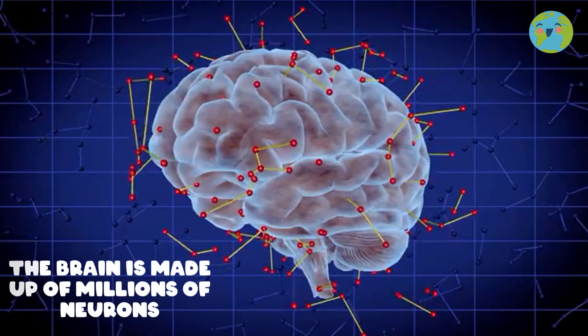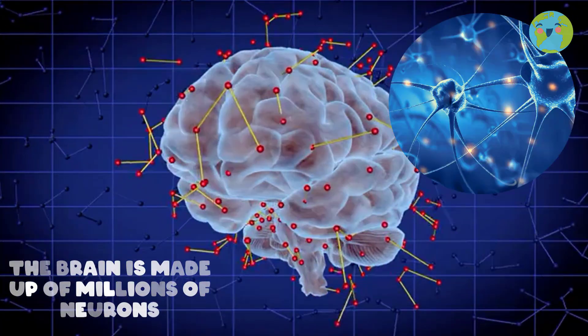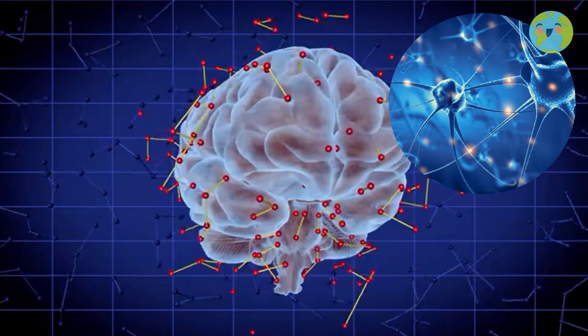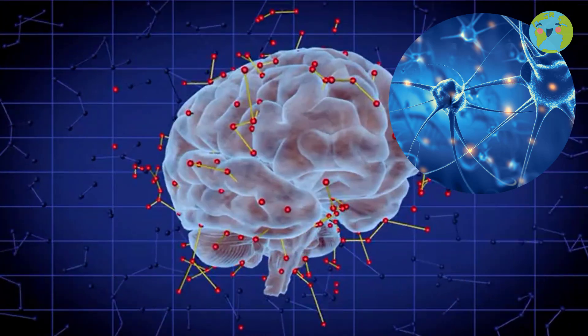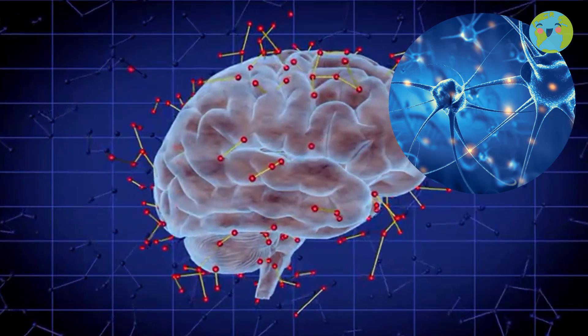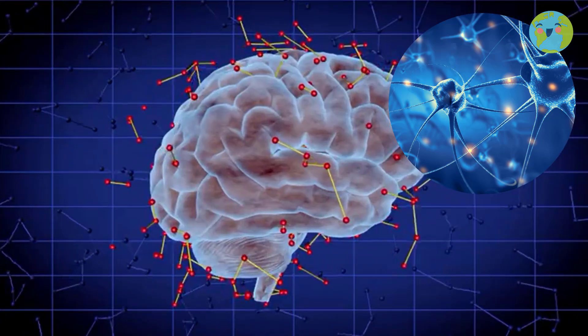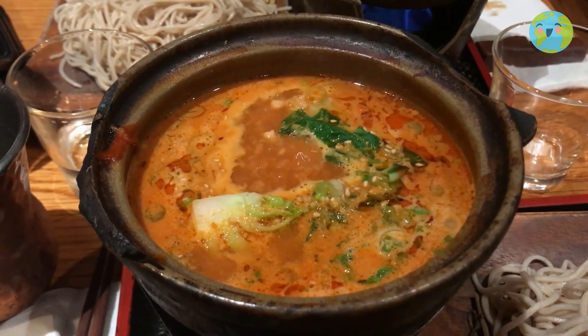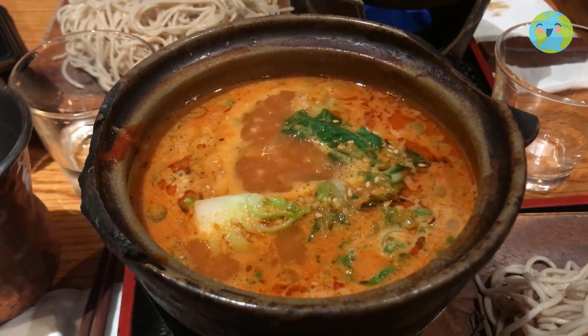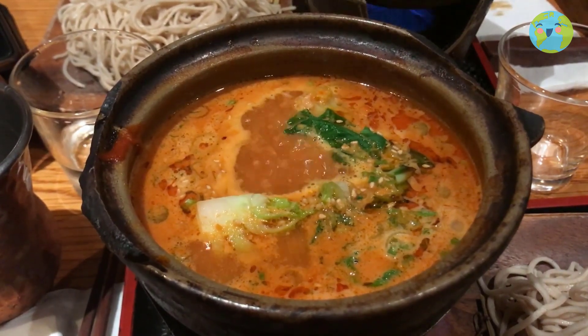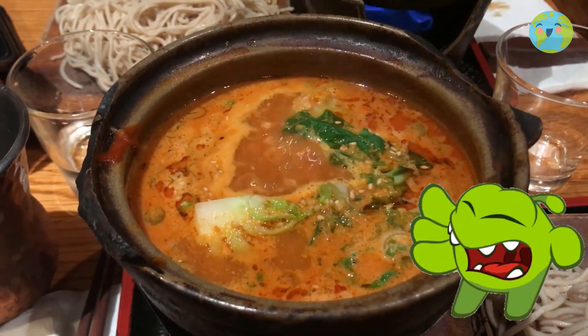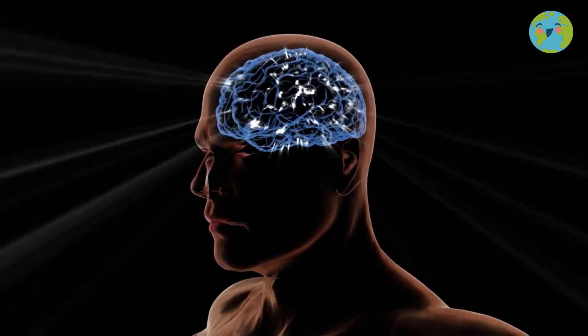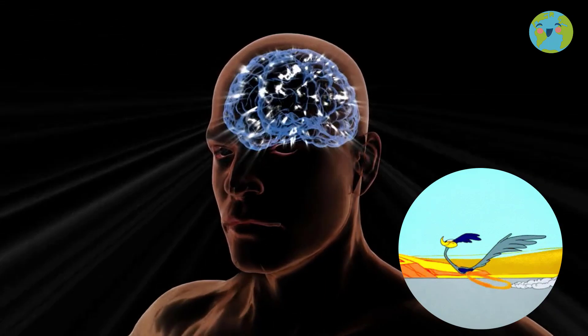The brain is made up of millions of neurons and it is thanks to these microscopic cells that our brain is always sending impulses or signals to our entire body in response to a stimulus. For example, when you take a plate of hot soup, your brain sends a signal to your hand so that you release it quickly and do not burn yourself. But that happens at an impressive speed, so much so that you don't even realize it.